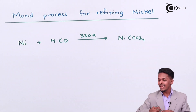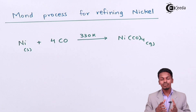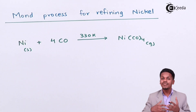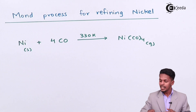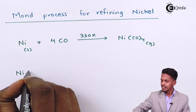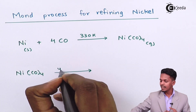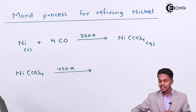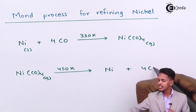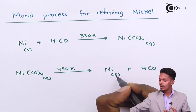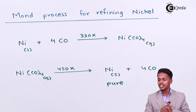This volatile substance, Ni(CO)₄ or tetracarbonyl nickel, is collected and further treated at a higher temperature. For decomposition, a temperature of around 450 Kelvin is needed. At this temperature, the volatile substance decomposes to form pure nickel along with 4 moles of carbon monoxide (CO). This is Mond's process for refining nickel.